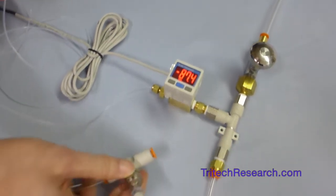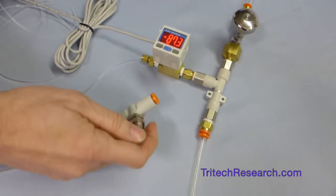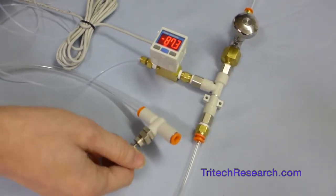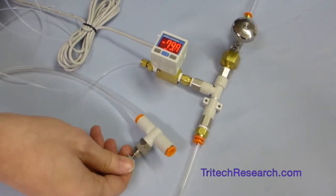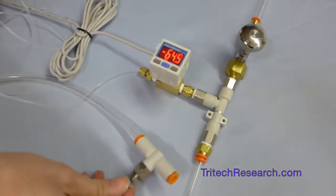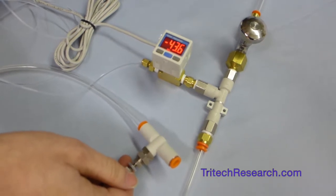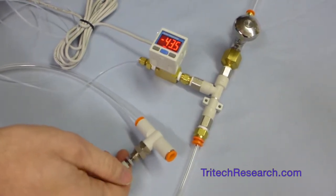So now as I turn this valve and decrease the output flow, you'll see that we have some control. So the amount of vacuum is decreasing. And it's pretty stable. If I don't touch it, it stays pretty much where I leave it.